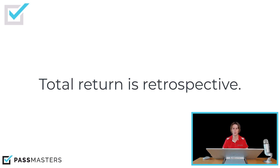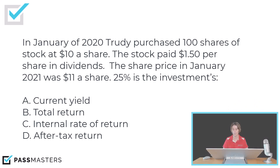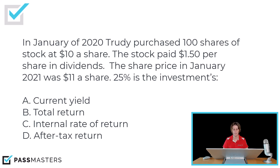Let's look at some practice questions on total return. In January of 2020, Trudy purchased 100 shares of stock at $10 a share. The stock paid $1.50 per share in dividends. The share price in January 2021 was $11 a share. Is 25% the investment's current yield, total return, internal rate of return, or after-tax return? We have yield of $1.50 plus growth of $1.00 — yield plus growth — $2.50 divided by what was paid for the security, $10. That is 25%. 25% is this investment's total return.